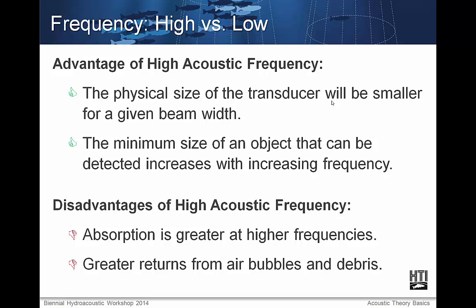With different applications using different frequency ranges, there are advantages and disadvantages to either. Some advantages of high acoustical frequency include: the physical size of the transducer will be smaller for a given beam width, meaning easier installation, more mobile devices, and generally less expensive components. The survey platform does not have to be as robust as required for arrays that can be meters across. Also, the minimum size of an object that can be detected increases with increasing frequency, meaning the ability to resolve clusters of fish into separate fish instead of school masses.